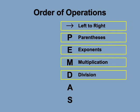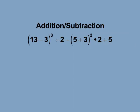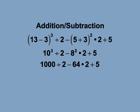The final rule is that after parentheses, exponents, multiplication and division, perform addition and subtraction. Look at this expression: the quantity 13 minus 3, cubed, divided by 2, minus the quantity 5 plus 3, squared, times 2, plus 5. Start with the terms in parentheses, which results in 10 cubed divided by 2, minus the quantity 8 squared times 2, plus 5. Next, simplify the exponential terms, giving 1000 divided by 2, minus the quantity 64 times 2, plus 5. Then perform multiplication and division, giving 500 minus 128 plus 5. The last step is addition and subtraction — the result is 377.